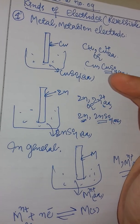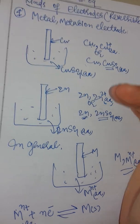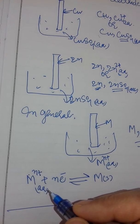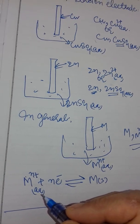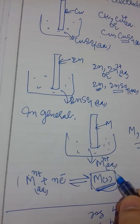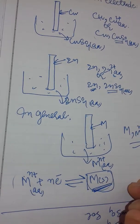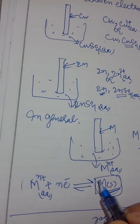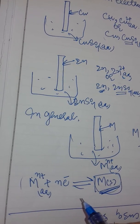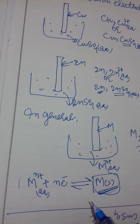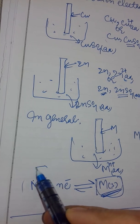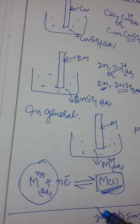If the metal rod behaves as a positive electrode, the reaction involves reduction. The equilibrium shifts towards the right, and the concentration of M^n⁺ ions decreases — it goes in the forward direction. On the other hand, if the metal rod behaves as a negative electrode, oxidation occurs. The equilibrium shifts towards the left, because when the metal undergoes oxidation, the positive charge increases and this reaction is favored.